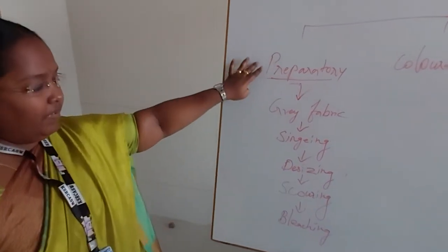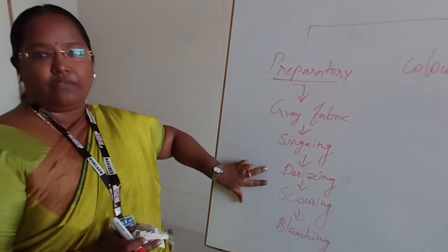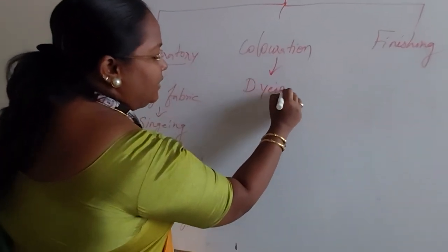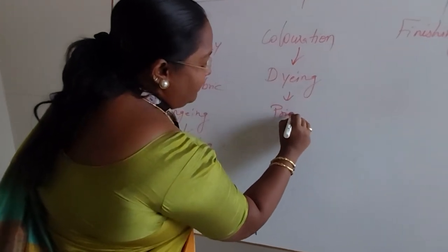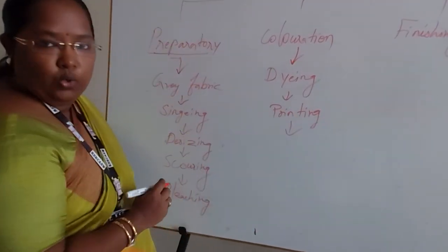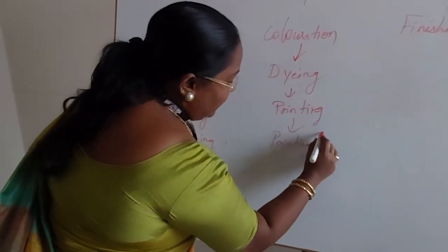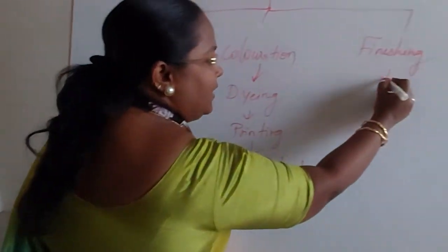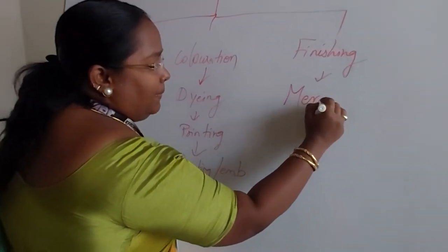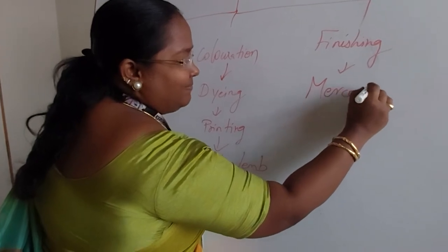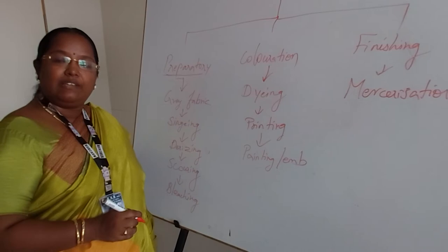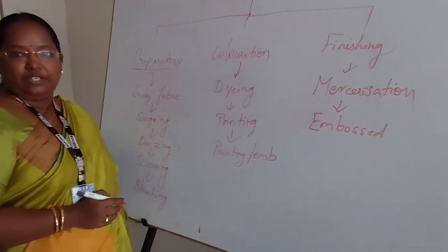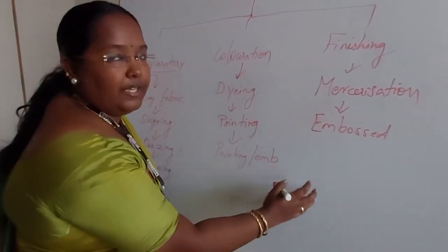And the next preparatory step is bleaching. So in preparatory, we introduce these four processes — singeing, desizing, scouring, and bleaching — which are very essential for our textile industry. For coloration, we can apply dyeing, printing, or painting, and any other coloring process. For finishing, we can use mercerization, which gives a luxury feel to the fabric, and embossed finishing, among many other types of finishes.